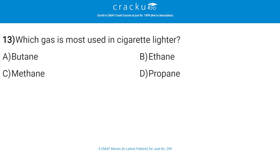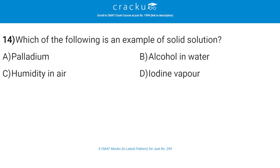Which gas is most used in cigarette lighters? The correct answer is butane. It is a highly flammable, colorless, easily liquefied gas used in gas-type lighters.